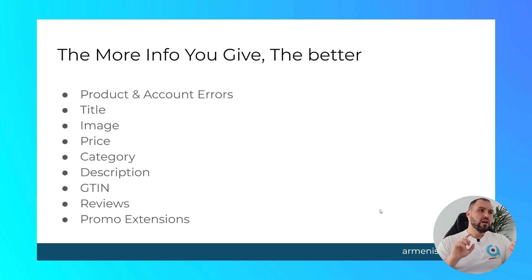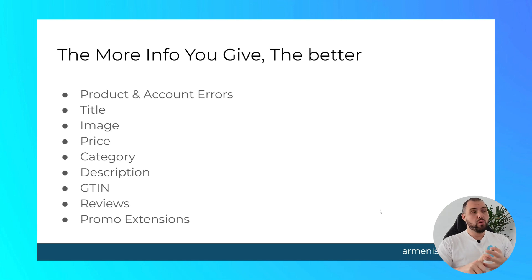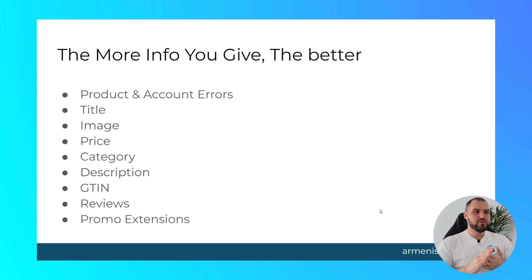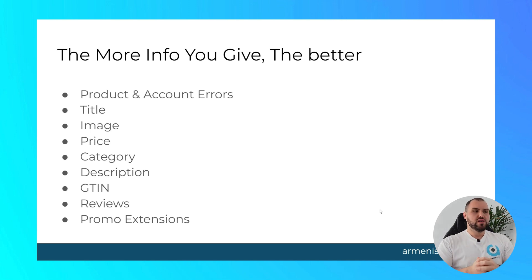Product and account errors are a big one. The titles are very important. Images, price, the category, the Google category, description, the GTIN — if you have one, don't worry if you don't. Reviews and promo extensions are all very important parts of feed optimization.